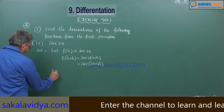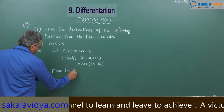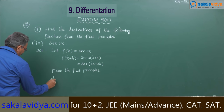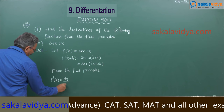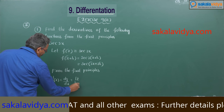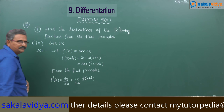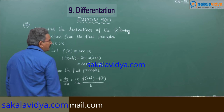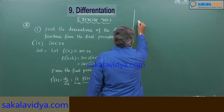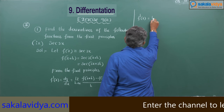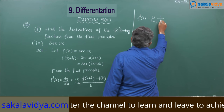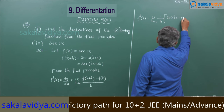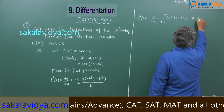From the first principles, f dash x is equal to dy by dx, limit h tends to 0, f of x plus h minus f of x by h. So f dash x is equal to limit h tends to 0, 1 by h into secant of 3x plus 3h minus secant of 3x.